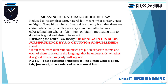As my notes say, the philosophers of natural theory hold that there are certain objective principles in every man, no matter his race or color, telling him what is fair, just or right, motivating him to do what is good and abstain from evil. In Okuniga's book on jurisprudence, he said: if ten men from different countries are put in separate rooms and each is asked in their own language whether it is good to steal, the majority will say no.